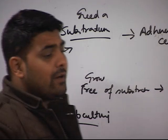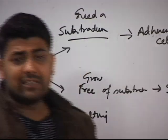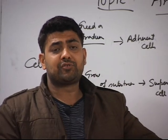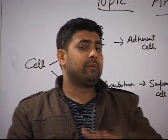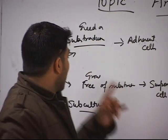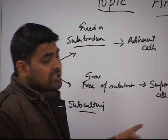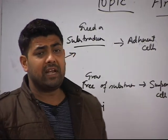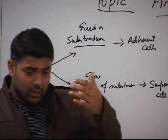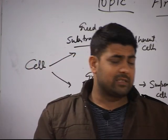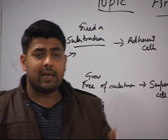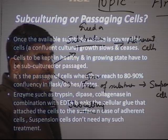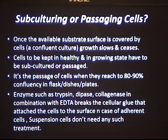Subculturing in the case of adherent cells requires detaching them from the substratum before they can be transferred into fresh vessels. In the case of suspension cells, the cells are already detached — we just need to get the cells out, replace the media with fresh media, and lower the density of cells in the vessel so that the cells can grow well in the new vessel. This is about subculturing or passaging.